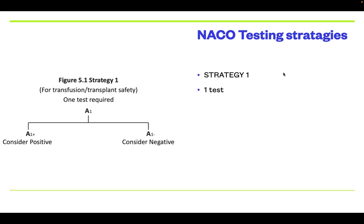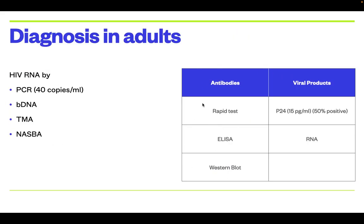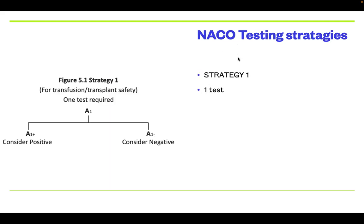Now, the testing strategies. First, the NACO strategies, followed by the CDC guidelines. The NACO strategies recommend testing for HIV antibodies. Strategy 1 is used for screening for blood transfusion. Whenever a person goes to donate blood, the blood bank checks for HIV. Only one test is required — if positive, the blood is not accepted; if negative, it is considered negative.